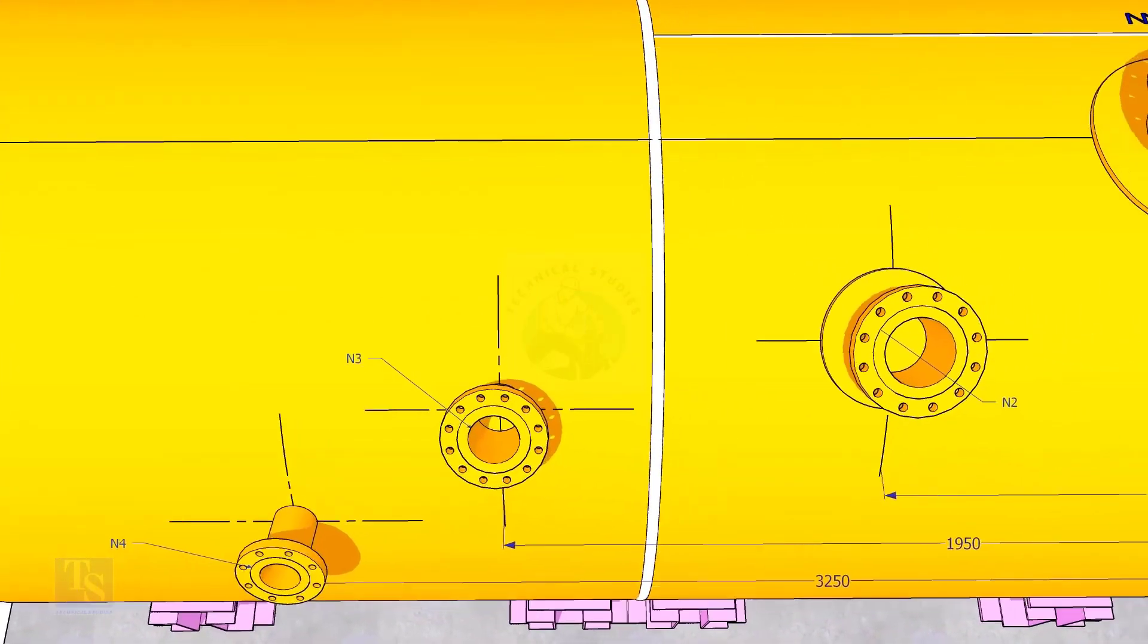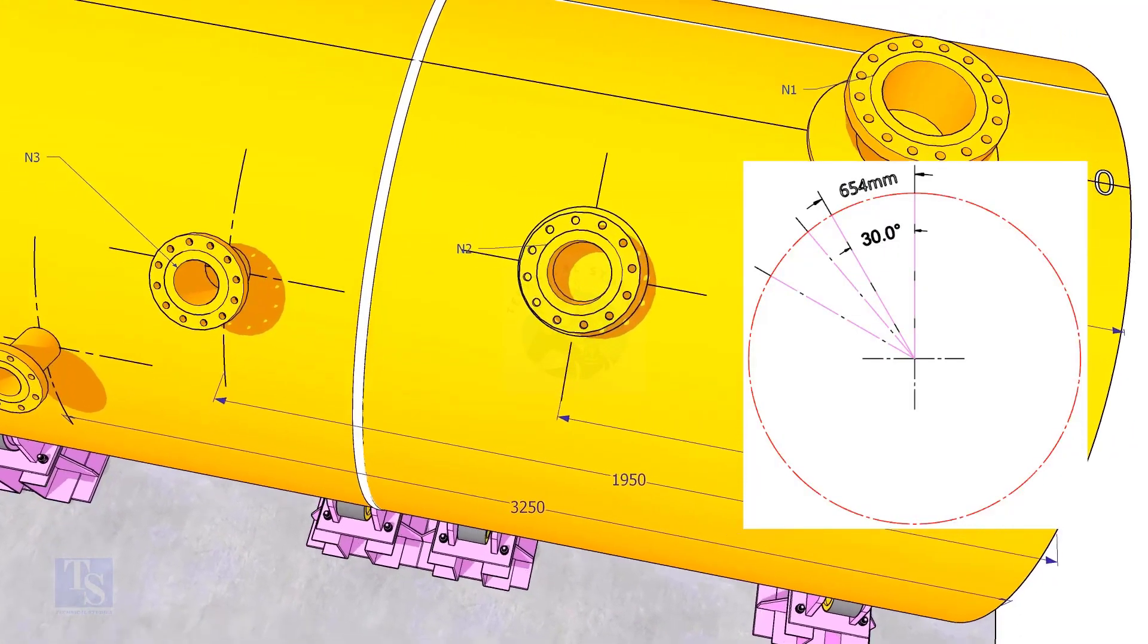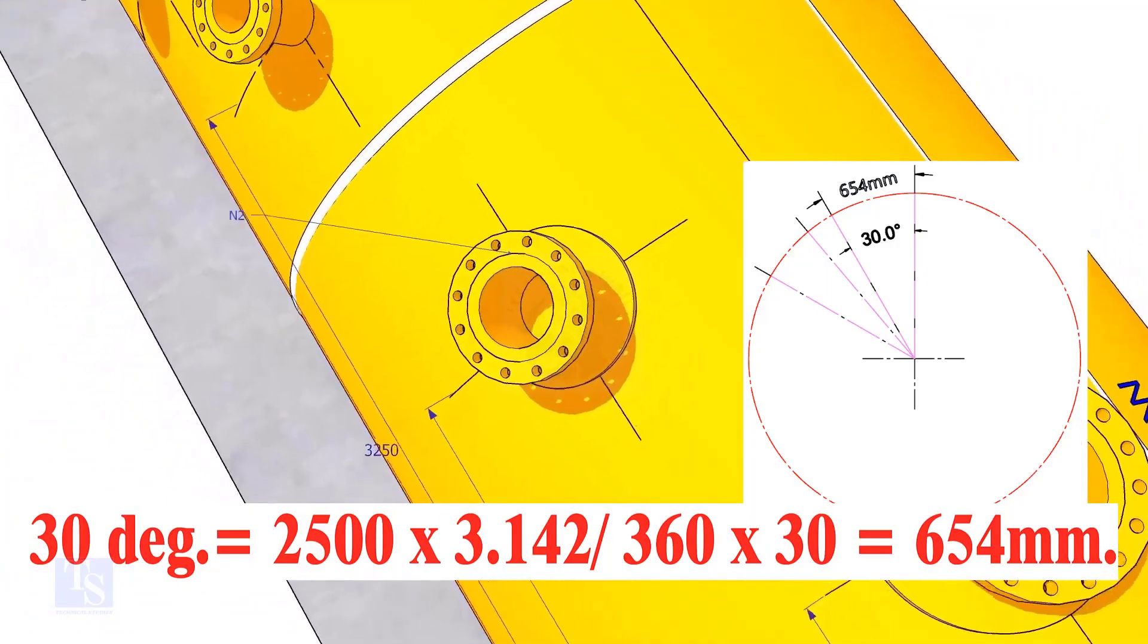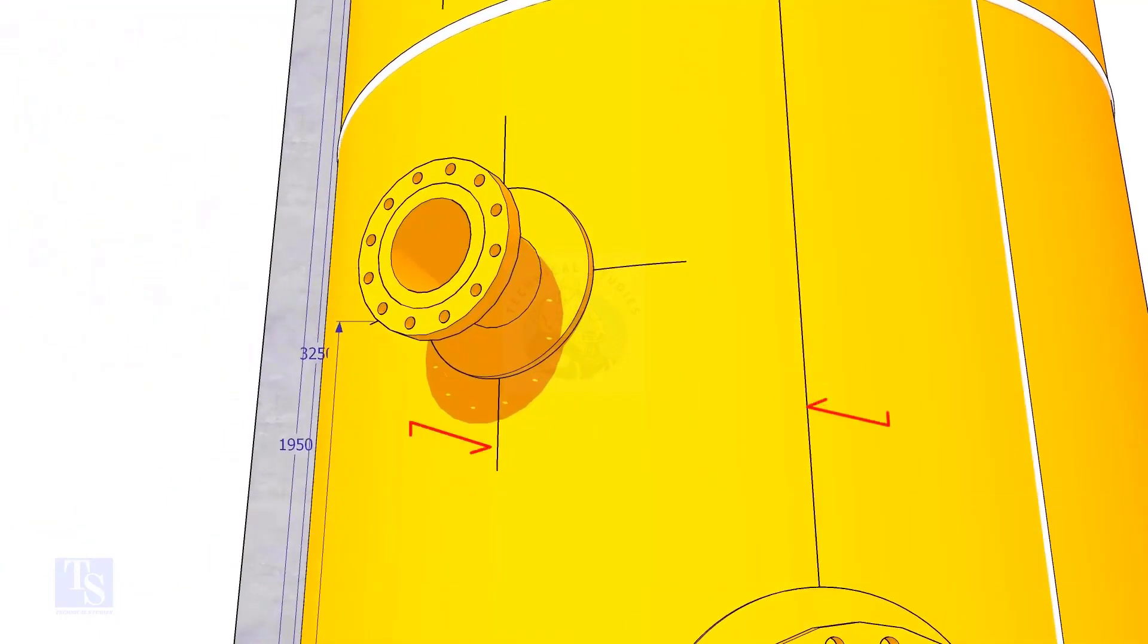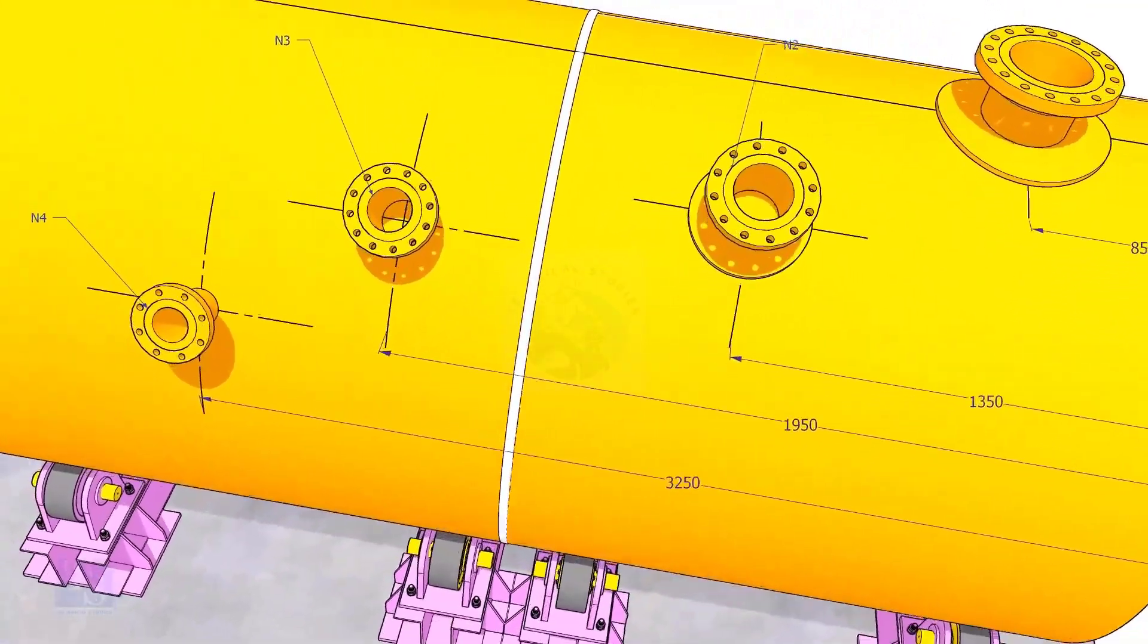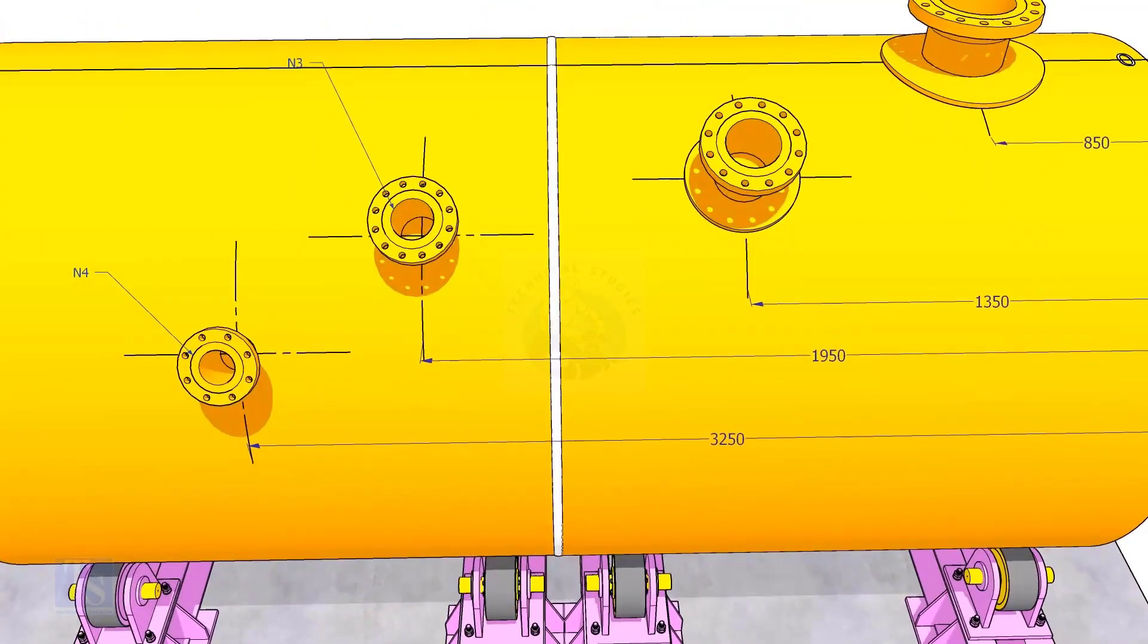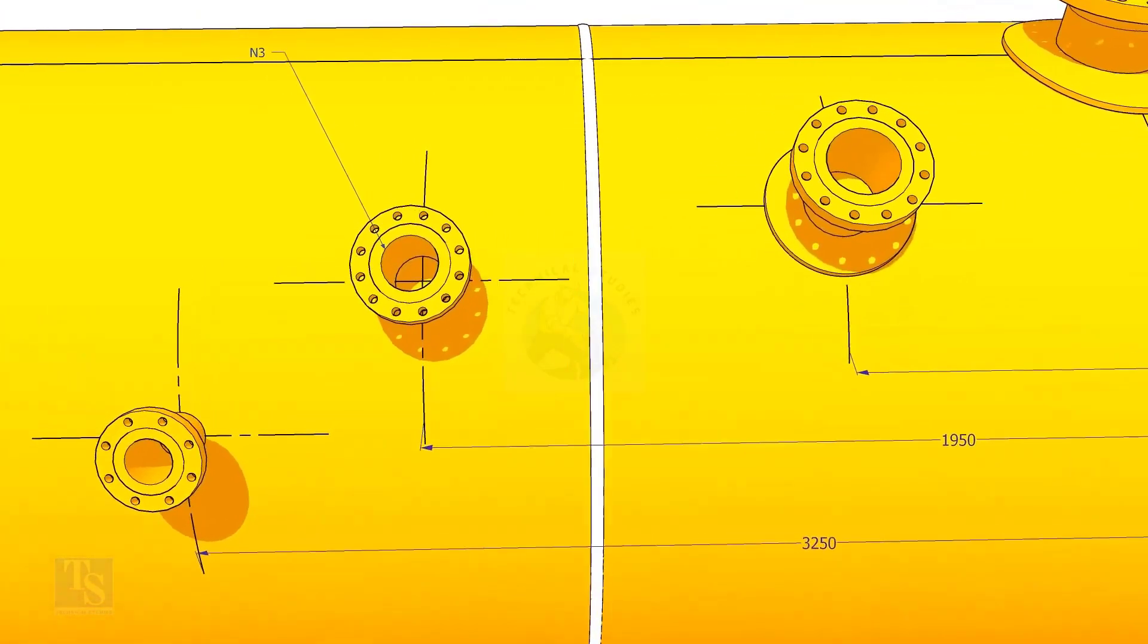Let us mark the center of nozzle N2. It comes on 30 degree anti-clockwise. Convert 30 degree to arc length. Mark this dimension at two locations as shown and draw a line. Draw an arc of 1350 millimeters from the edge of the shell intersecting this line. This point is the center of the nozzle N2.